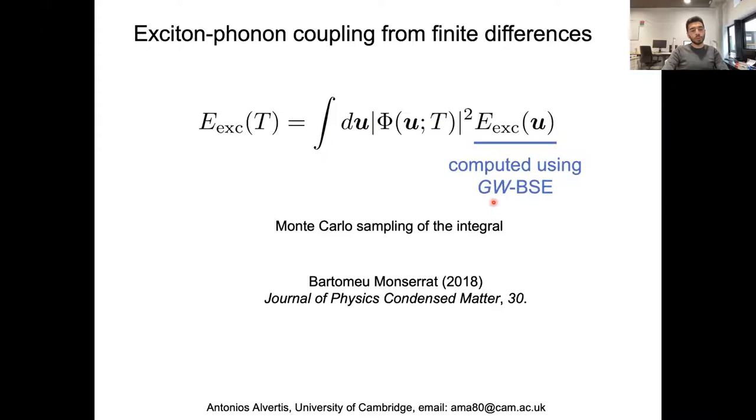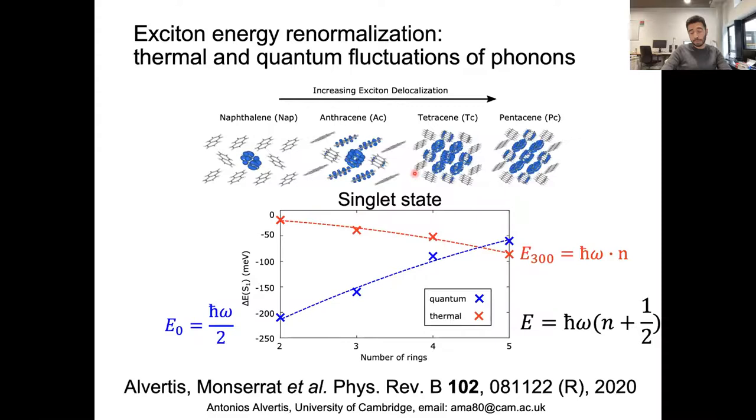The thermally activated motions are strongly populated and can couple strongly to the exciton. We wanted to understand how these different kinds of phonons affect exciton energies. To do this, we employed a finite differences methodology. You can perform a Monte Carlo integration, generate displaced configurations U distributed according to the harmonic density function, and compute the exciton energy with GW-BSE methods based on Green's functions.